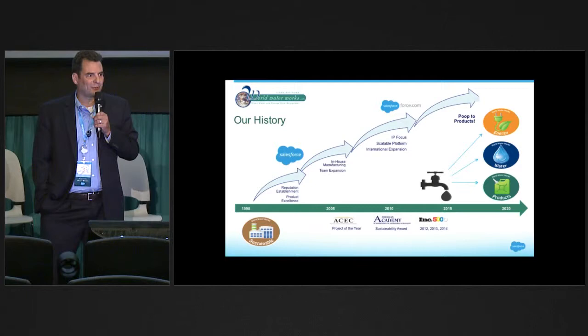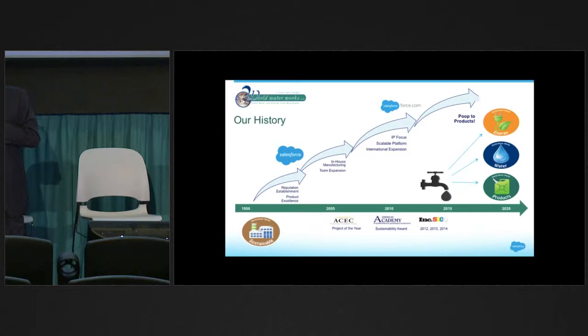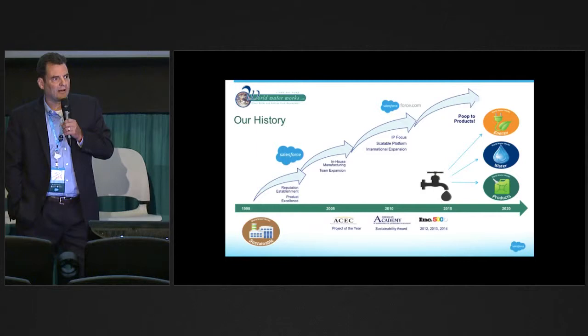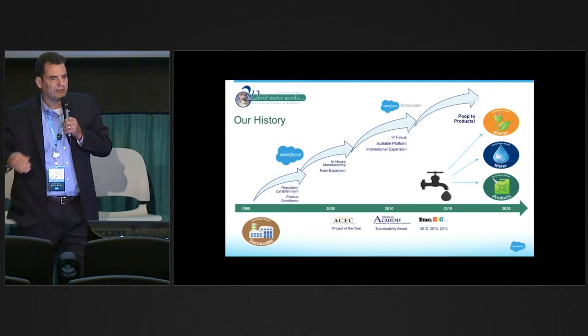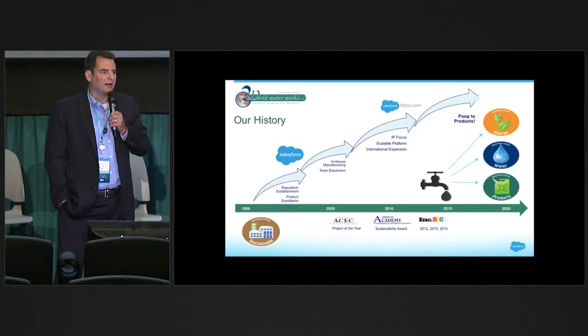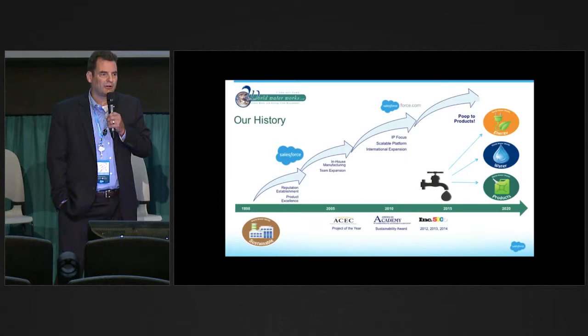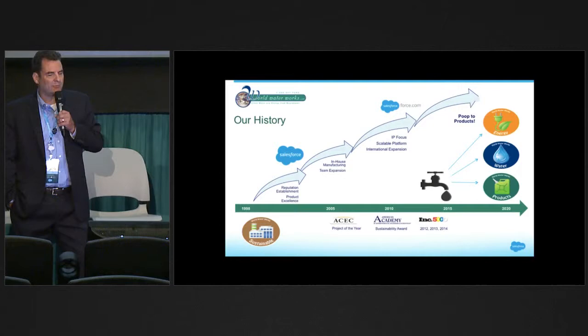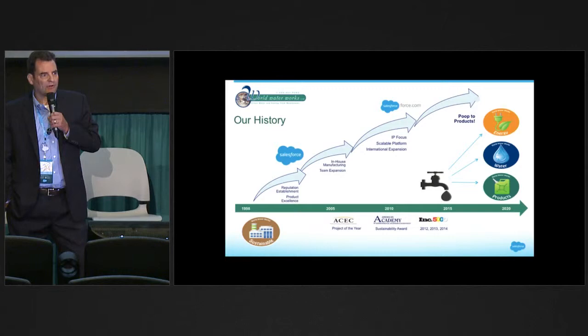Today we're nearly 100 people strong. We've been on the Inc. 5000 list for the last three years as one of the fastest growing companies, and our technology takes waste to products. In the early days, there were only a few of us and communication was easy. As we grew, we needed CRM. In 2001, we explored CRM — we knew Salesforce was out there but weren't ready for the cost, so we went to a different CRM system and failed miserably, then another. By 2003, we were all in on Salesforce. At Dreamforce 2004, I went home with about a dozen apps and we implemented a bunch of them — they helped our process and helped us grow.